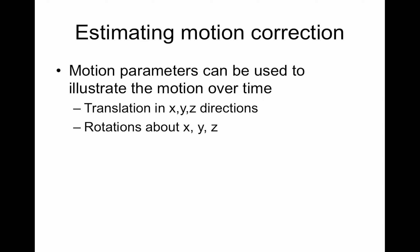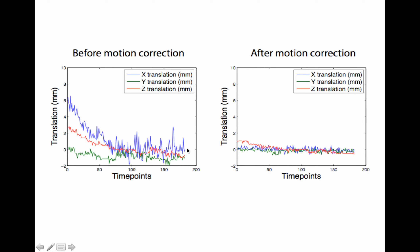The motion parameters can then be used to illustrate the motion — we've already looked at this through the framewise displacement (FD) metric, which uses these. We have translations in millimeters on the left and rotations on the right. These are the translations before and after motion correction. You should never run motion correction more than once — running it more than once causes it to start fitting to the signal in the data and you can remove your signal. I never worry about big drifty things; I worry more if there's a big spike, and this one doesn't have any.